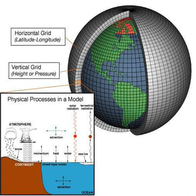OGCMs model the ocean with fluxes from the atmosphere imposed and may contain a sea ice model. For example, the standard resolution of HadCM3 is 1.25 degrees in latitude and longitude, with 20 vertical levels, leading to approximately 1,500,000 variables. AOGCMs combine the two submodels and remove the need to specify fluxes across the interface of the ocean surface. These models are the basis for model predictions of future climate, as discussed by the IPCC. AOGCMs internalize as many processes as possible and have been used to provide predictions at a regional scale. While simpler models are generally more analyzable, AOGCMs may be nearly as hard to analyze as the climate itself.